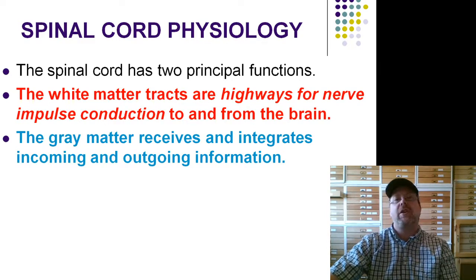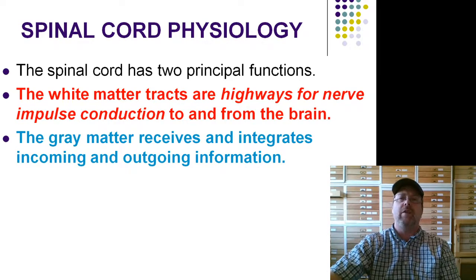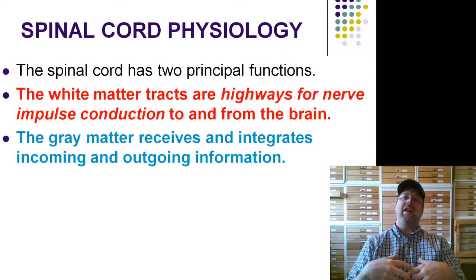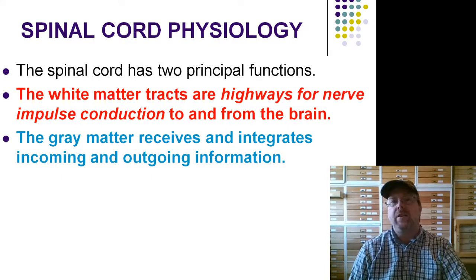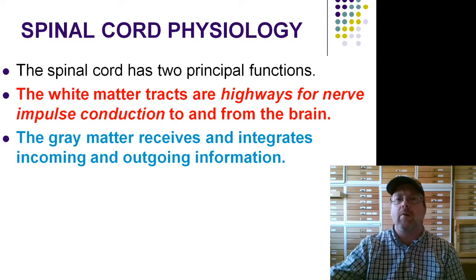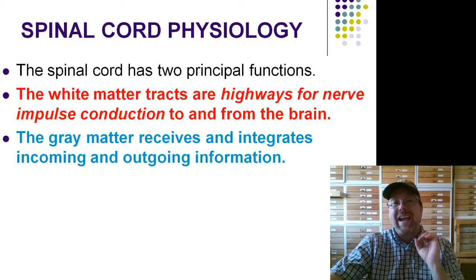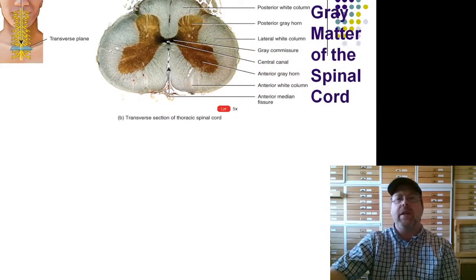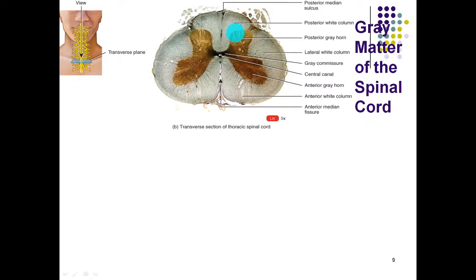There's a second function of the spinal cord involving the gray matter. Remember, we talked about how the gray matter is a processing center — an integration center. A lot of people think of it as just being part of the brain, but it's part of the spinal cord as well. Your spinal cord is a decision-making organ along with the brain. If you look at a cross section of the spinal cord, the butterfly-shaped structure in the center is the gray matter, which is the processing and decision-making part of the spinal cord.